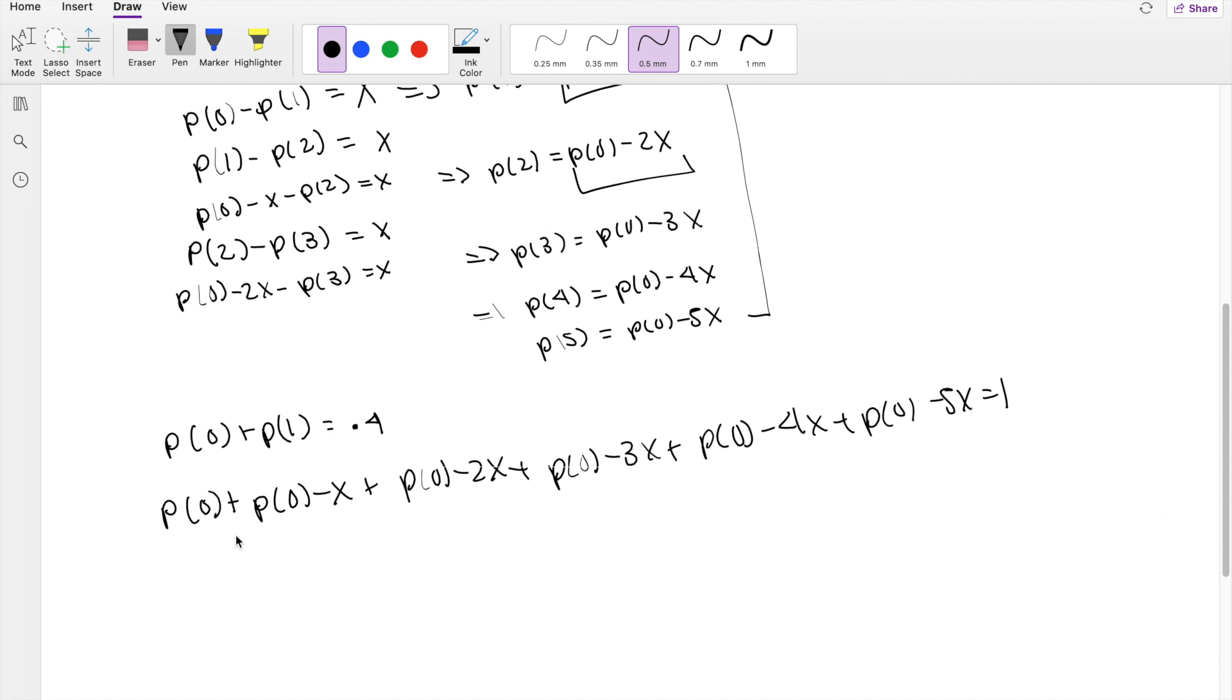Ooh, that's a mouthful. So how many probability of 0's are there? 1, 2, 3, 4, 5, 6. Six probability of 0's. Minus how many x's are there? 1, 2, 3, 4, 5, 6, 10, 15. So that's 15x is equal to 1.